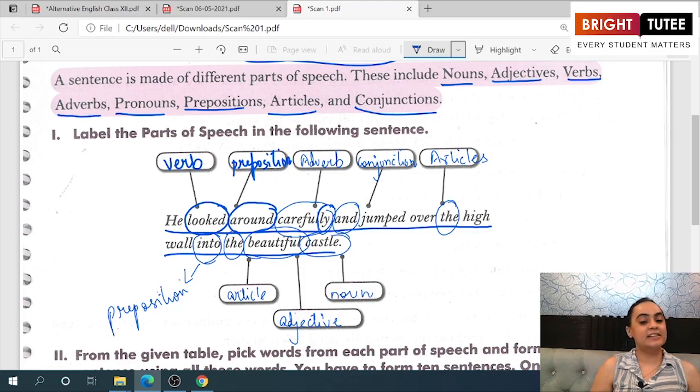These are the different parts of speech. A verb is an action word. Preposition is something that connects one verb to another verb, one noun to another noun, one adjective to another adjective. An adverb tells you something about the verb—it modifies a verb and gives us more information about it.